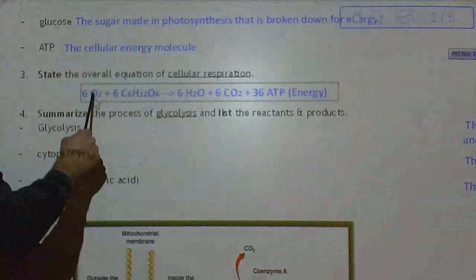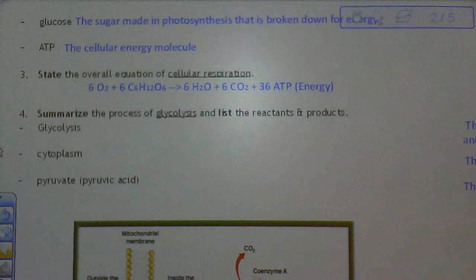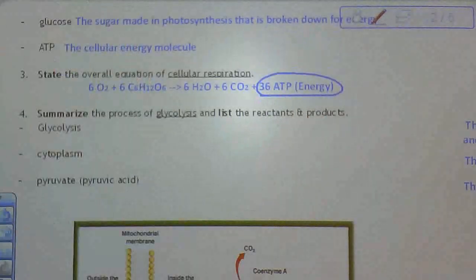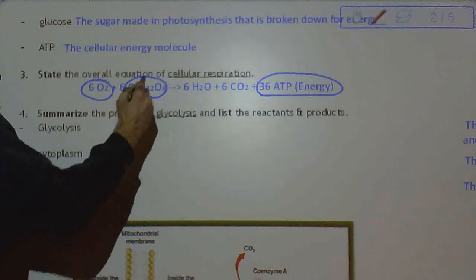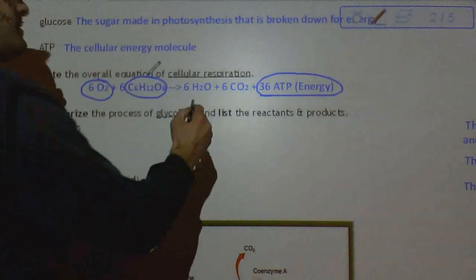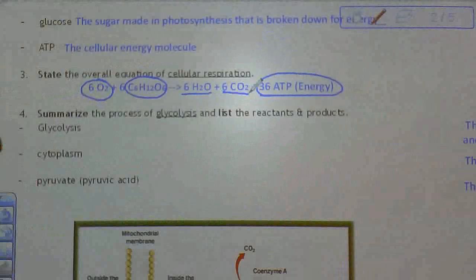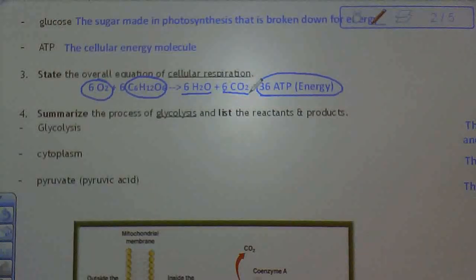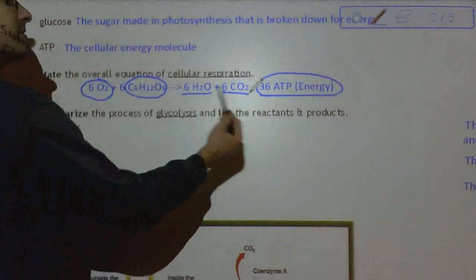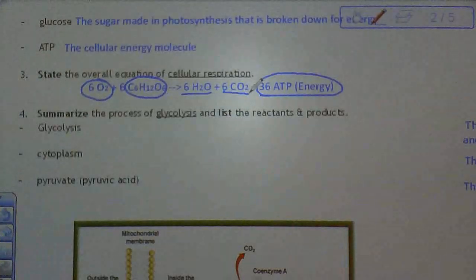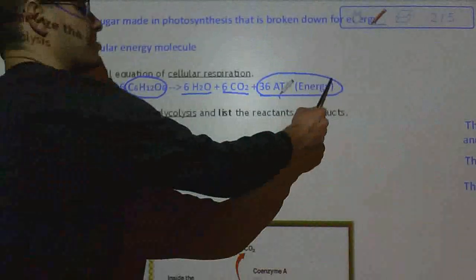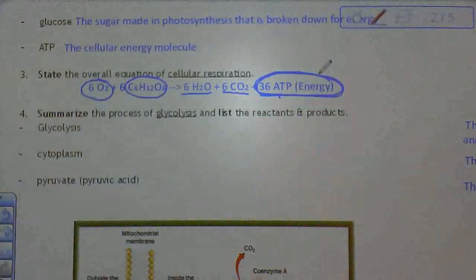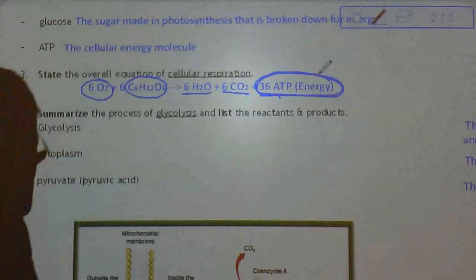The overall equation for cellular respiration is going to be very familiar because it is the exact opposite of photosynthesis. Oxygen and glucose go in; water and CO2 come out. That is what you breathe out — H2O and CO2. The most important part of this whole unit is that we are making ATP, and there are 36 ATP made for every glucose molecule.